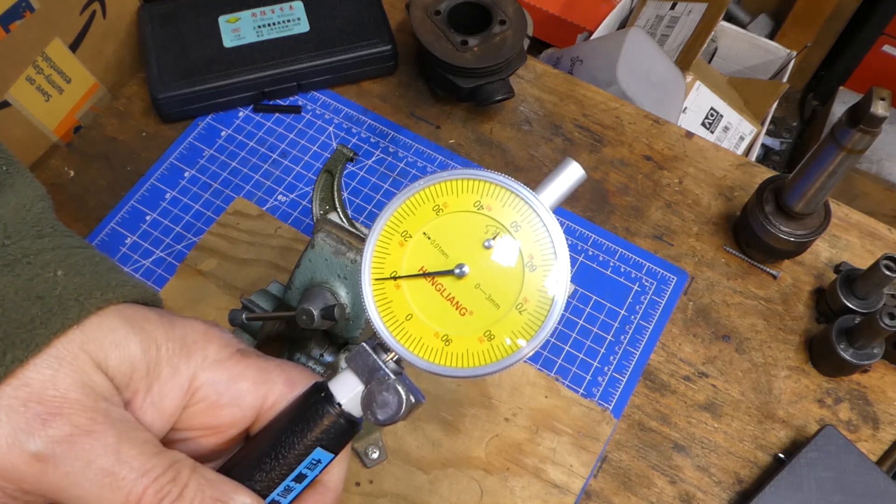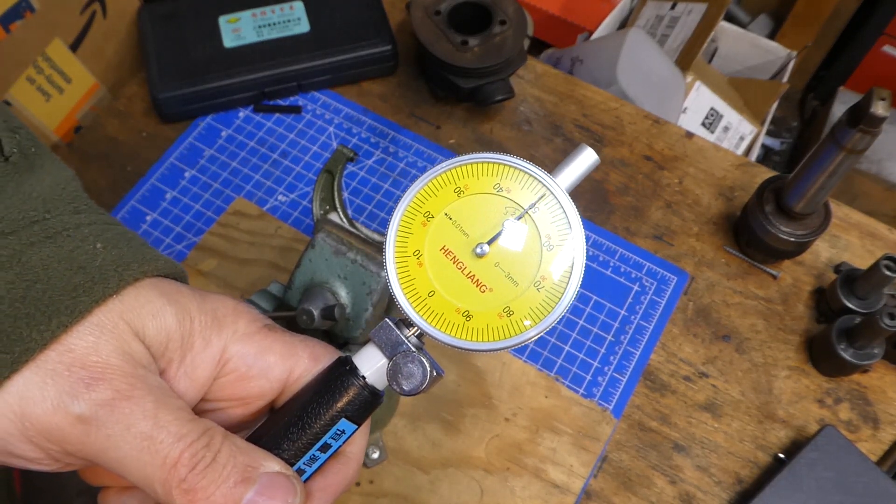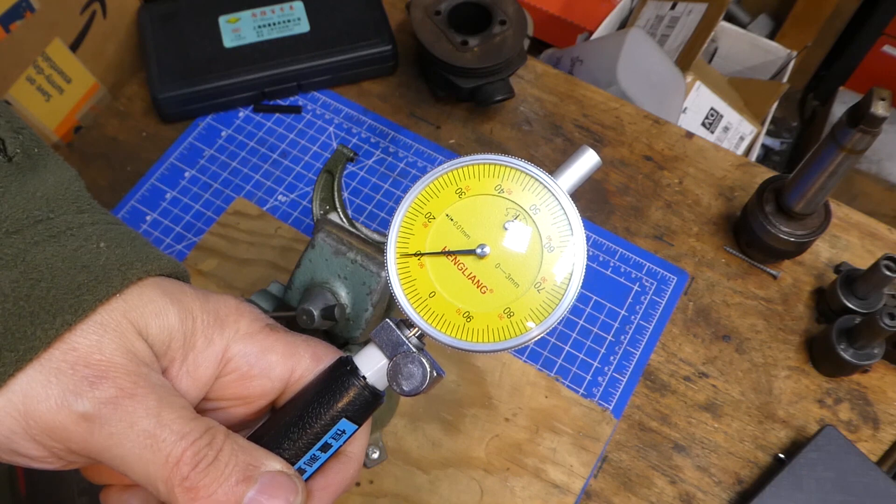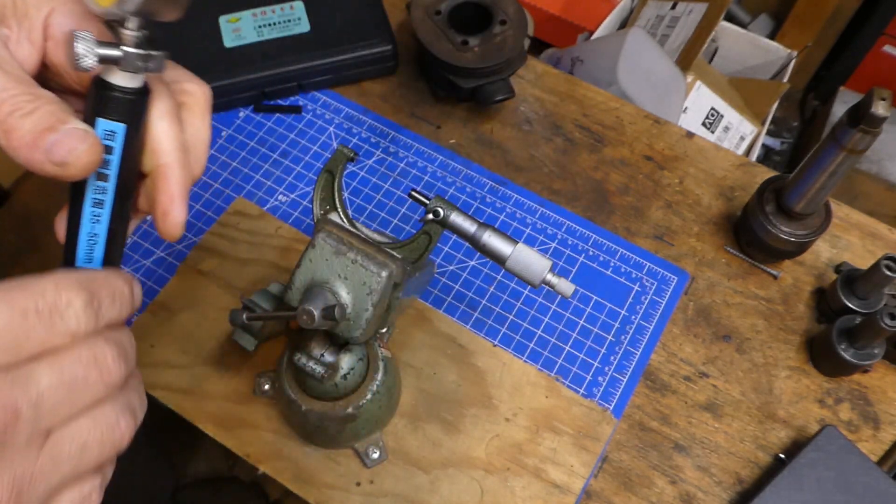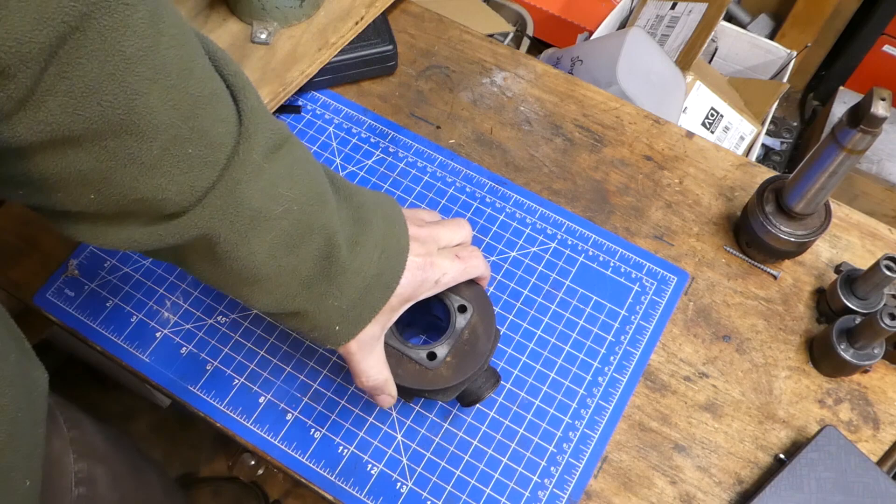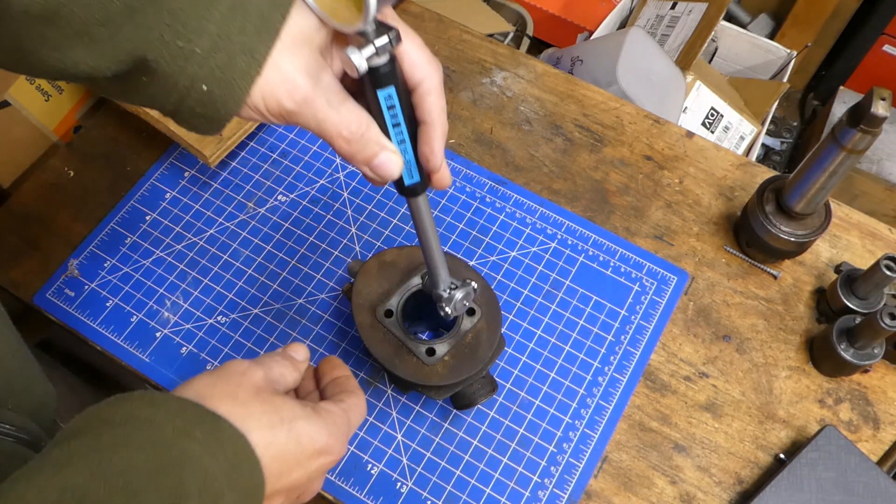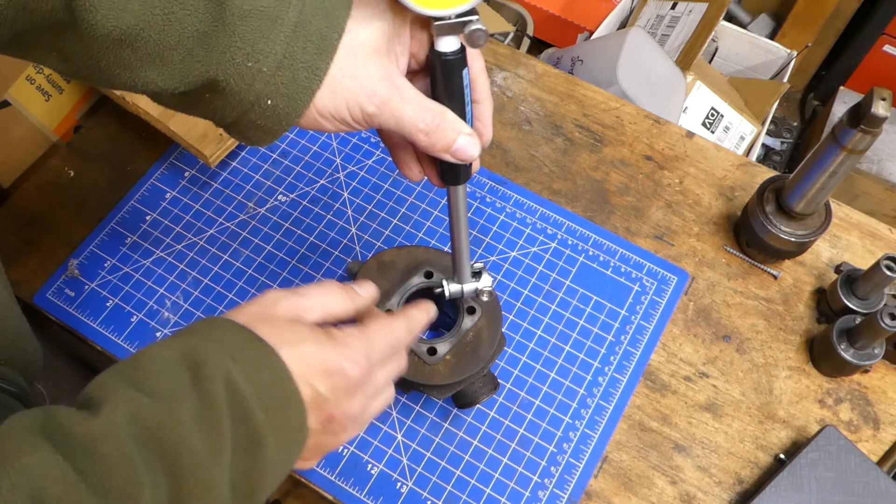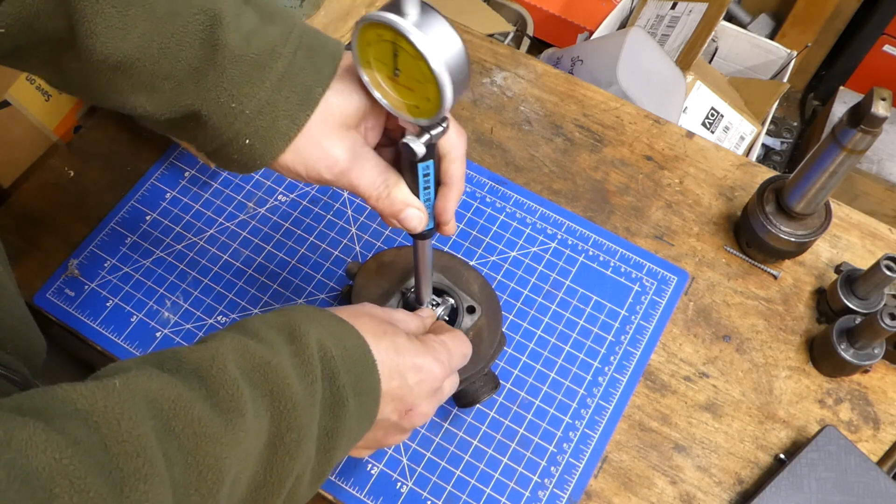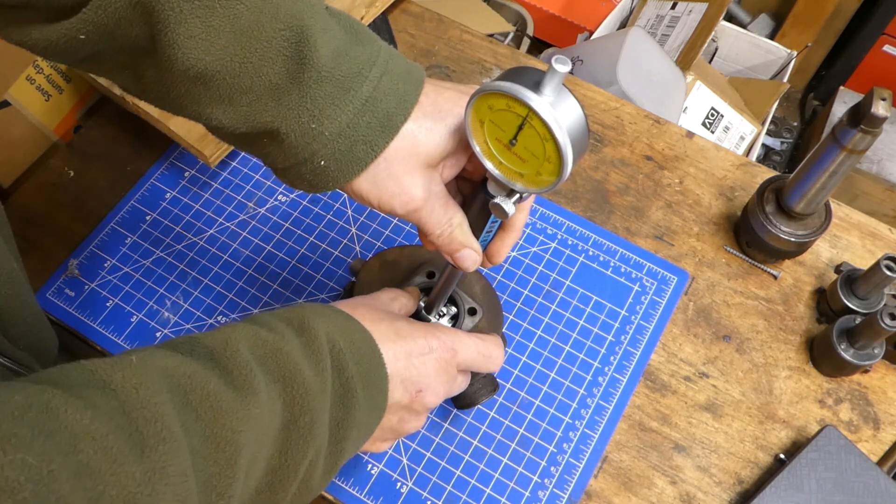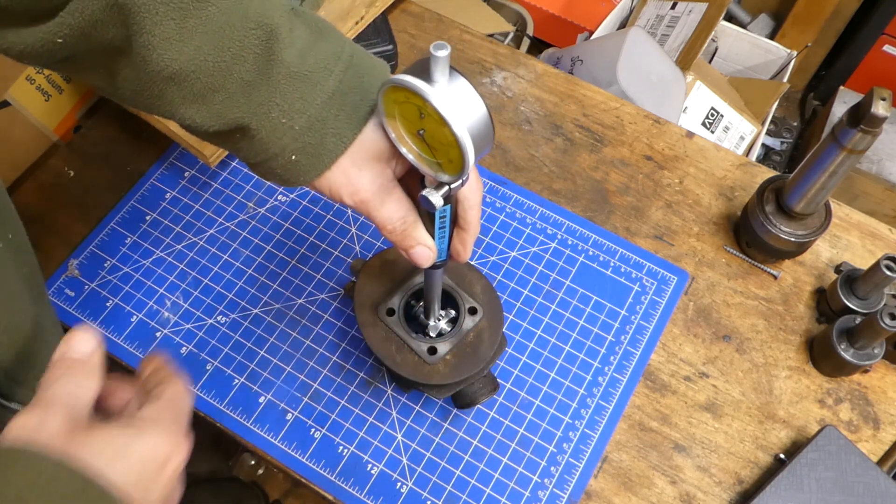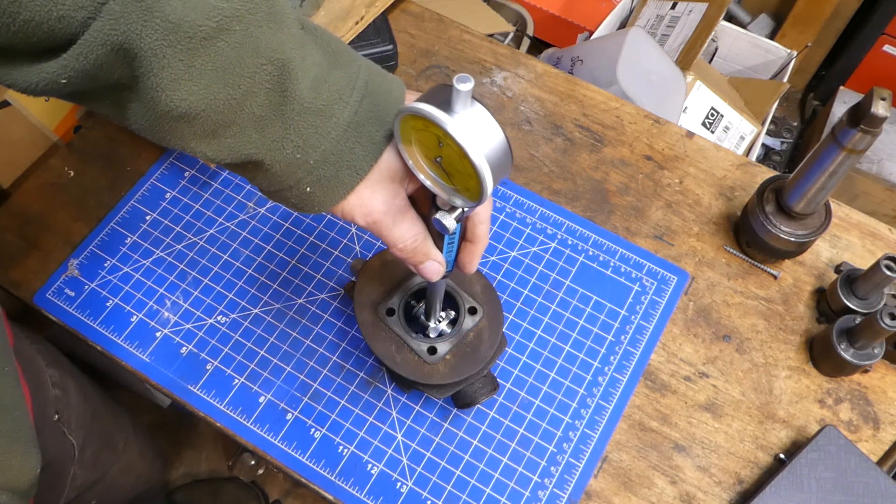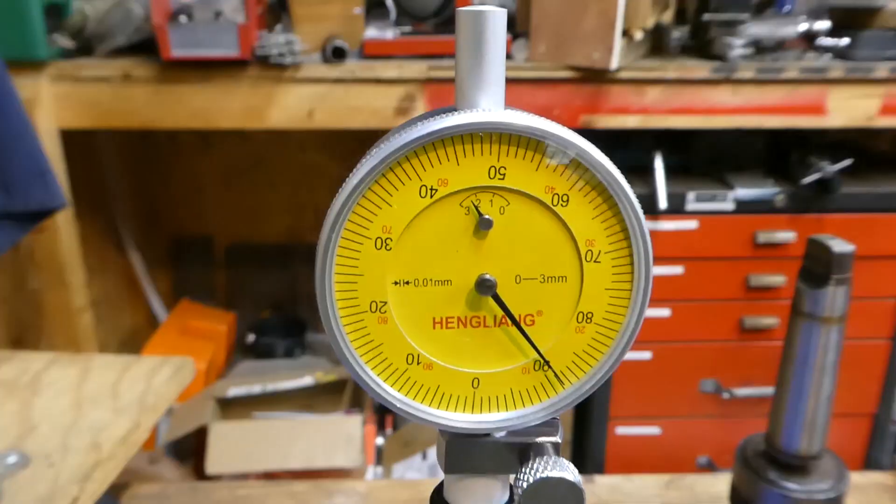Short of the zero, that means it's larger. And if it's past zero, that means it's smaller than 38 millimeter. Let's go ahead and put it in the bore and see what we get. It is basically self-centering because it's a three-point of contact. It has the anvil head and the two wheels. So we'll get it in there, depress the plunger a little bit, get it in there, and then we can kind of read it.